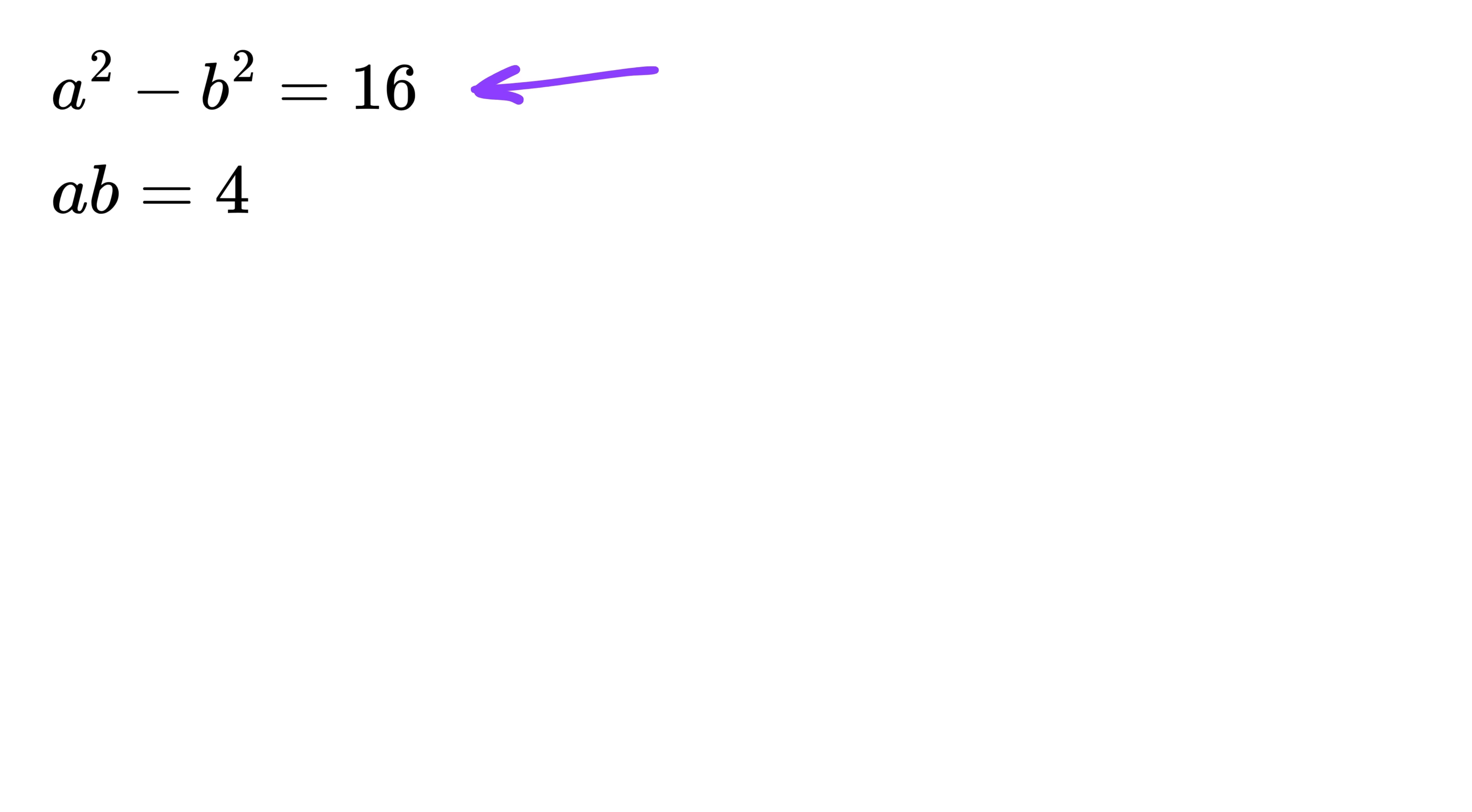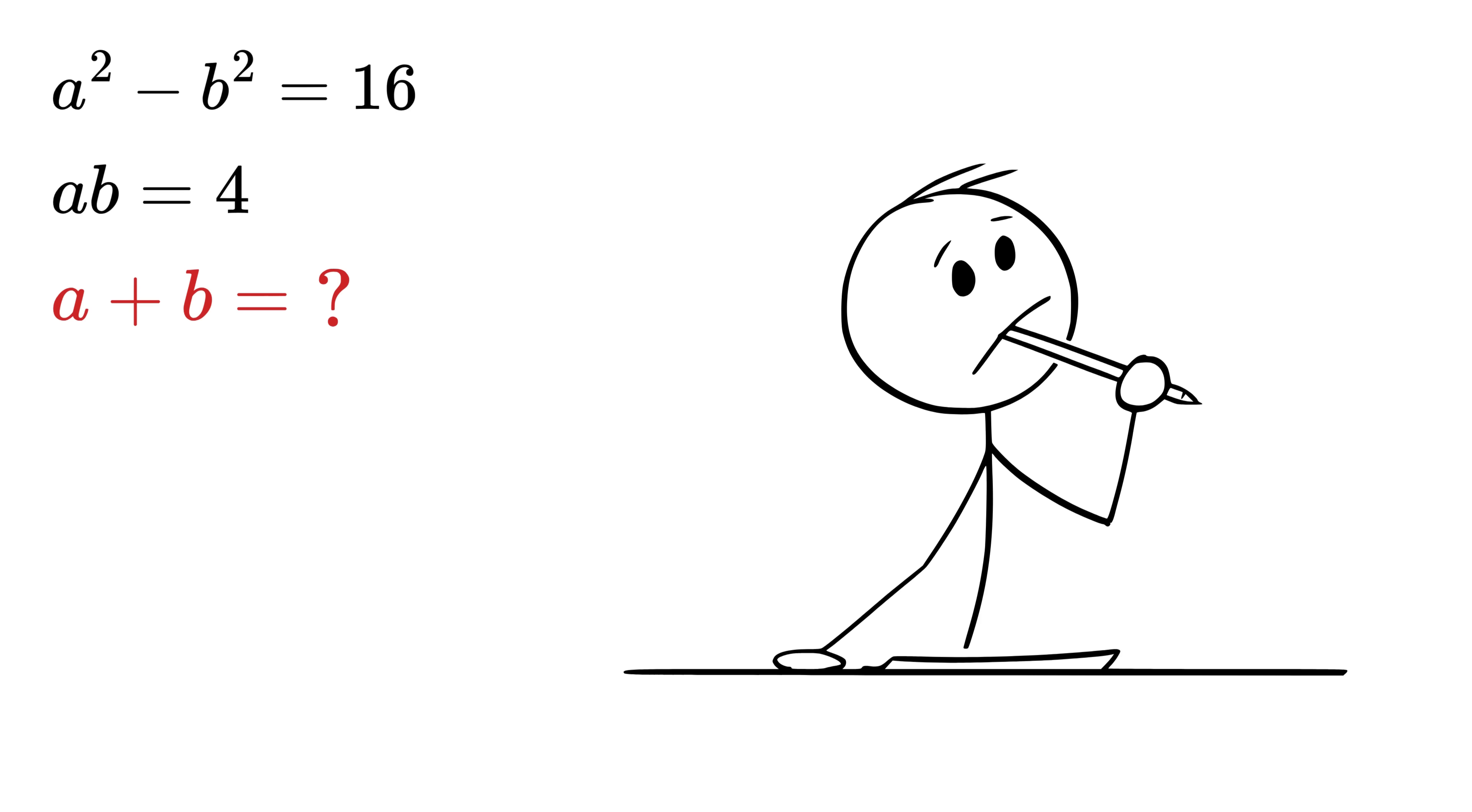We have this system of equations: A squared minus B squared equals 16, and AB equals 4. Our job is to find the value of A plus B.